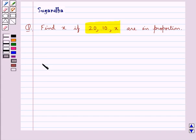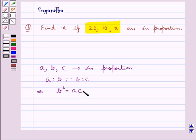If we are given any three numbers A, B and C and they are in proportion, that is, A is to B is proportional to B is to C, then we have B square is equal to AC.